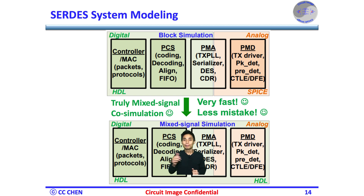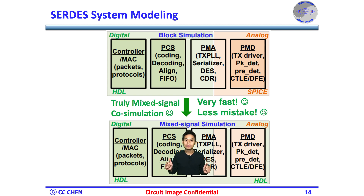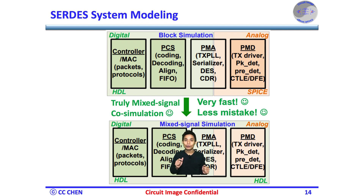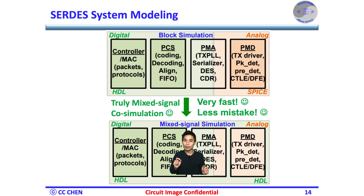The block boundary could be the interface between the digital and the analog blocks. Also, the block boundary could be an interface between any analog blocks. Nonetheless, the design iteration could be quick, even though a few mistakes were caught, owing to the fast simulation time of the truly mixed signal simulation in HDL modeling.